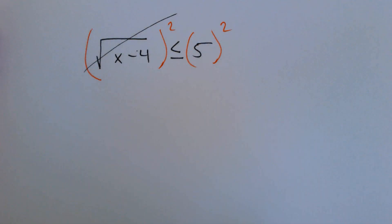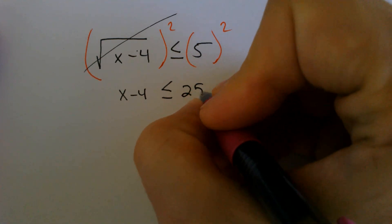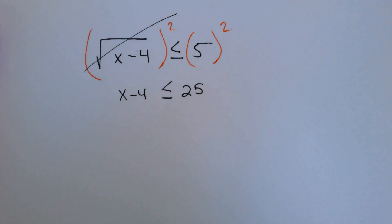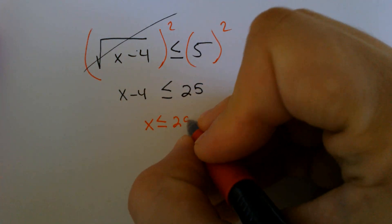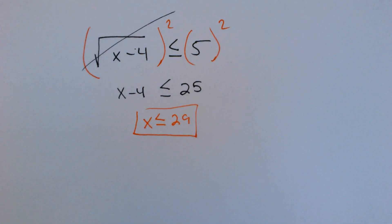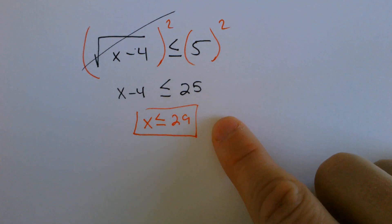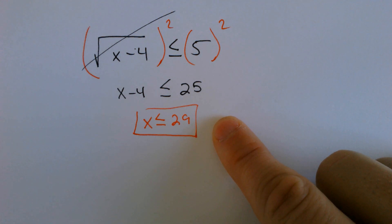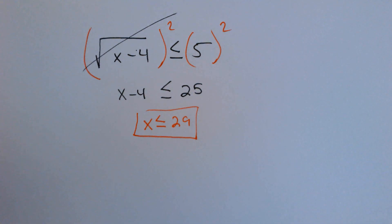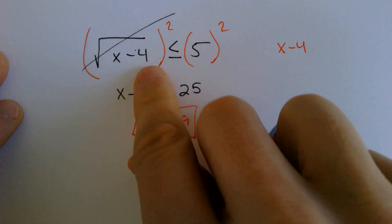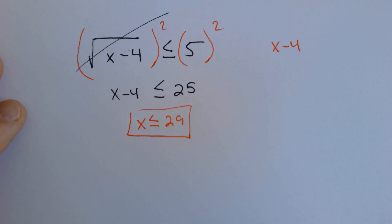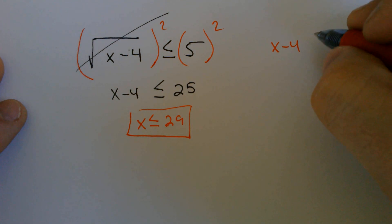You would end up canceling that part out. x minus 4 is less than or equal to 25. So from here, you would add the 4 over, and you would find out that x is less than or equal to 29. Congratulations, you have got half of your answer. This would be the part of your answer that most people would consider the solving part. But from here, now we need to also recognize that x minus 4, that part underneath the square root, has to be positive, because you can't square root a negative number.